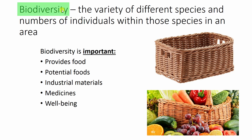Biodiversity is the variety of different species and the numbers of individuals within those species in an area. We're looking at the number of different species and also the numbers of individuals within those species. The higher these two numbers, the more biodiverse an area is. An area can be anything from a field to a country to a city.